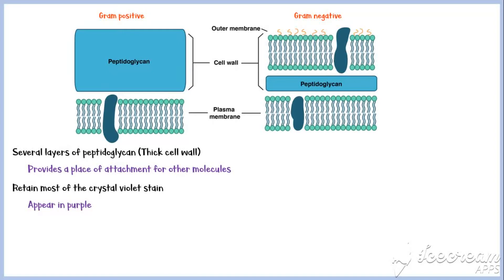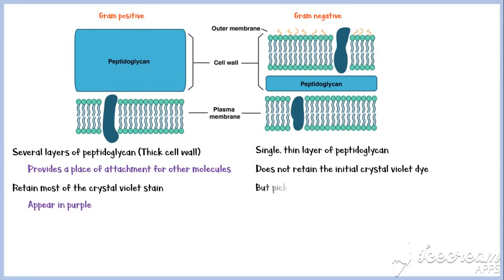In contrast, gram-negative bacteria contain only a single layer of peptidoglycan and do not retain the initial crystal violet dye, but pick up the pink color of the counter stain. Thus, gram-negative bacteria appear in pink color after the staining process.